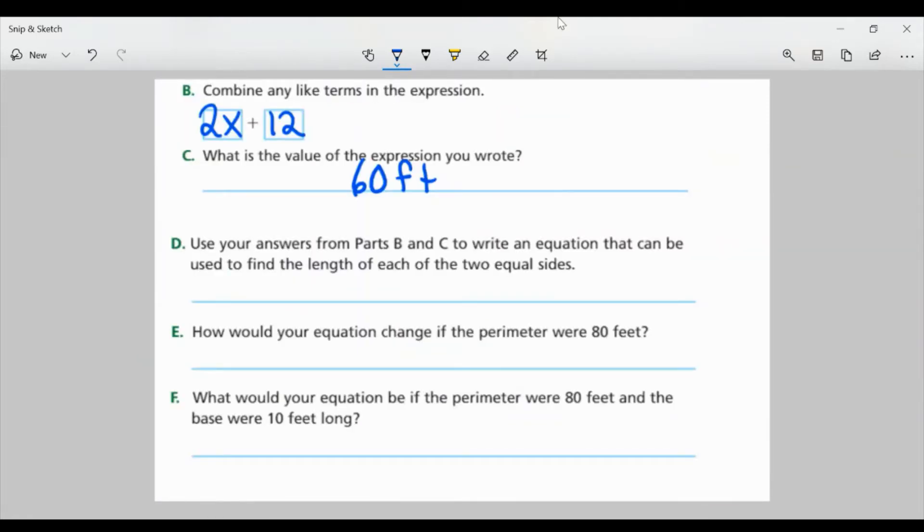So part D, use your answers from part B and C to write an equation that can be used to find the length of each of the two equal sides. Well, I know the perimeter is 60 feet. And I know in order to get 60 feet, I need to add all three sides, which we said was 2X plus 12. And it's that simple. That's our equation.